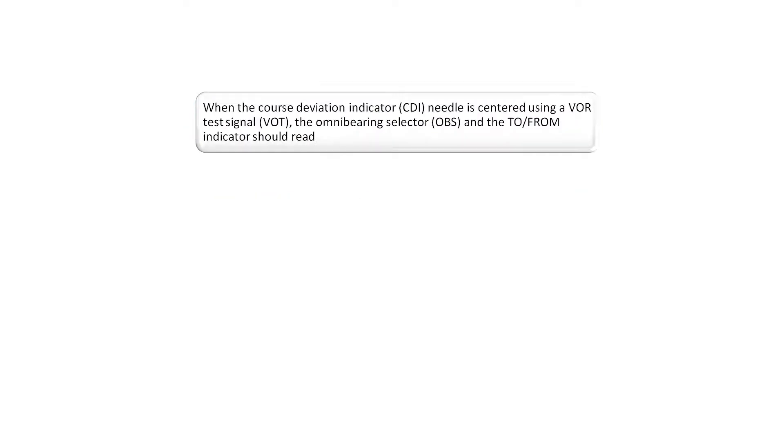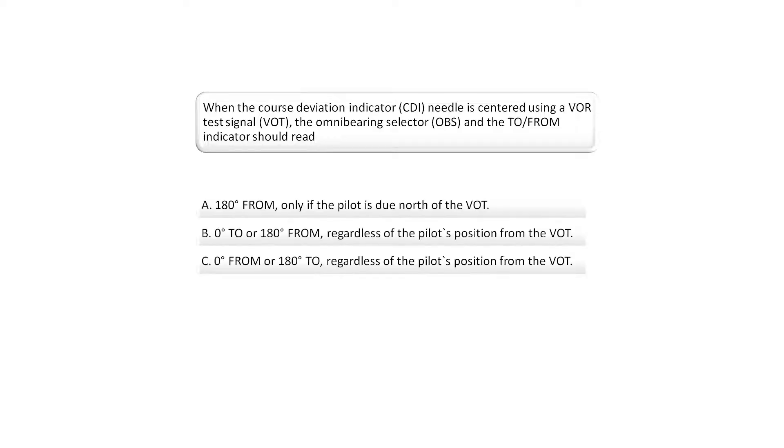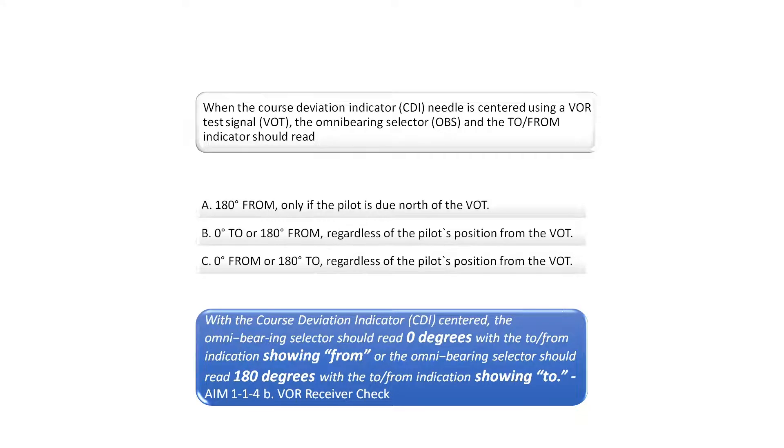When the course deviation indicator, also known as the CDI needle, is centered using a VOR test signal, the omnibearing selector and the to-from indicator should read... The omnibearing selector should read 0 degrees with the to-from indicator showing FROM, or the omnibearing selector should read 180 degrees with the to-from indicator showing TO. The correct answer is therefore C.